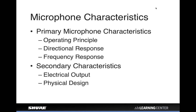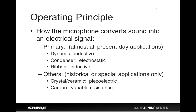We'll talk about how the microphone does its job — its operating principle — then directional response and frequency response, and some other characteristics including the electrical output and physical design. A microphone is a transducer: it converts sound waves (variations in air pressure) into an electrical signal — a varying voltage — that can then be used for amplification, recording, or whatever you need.